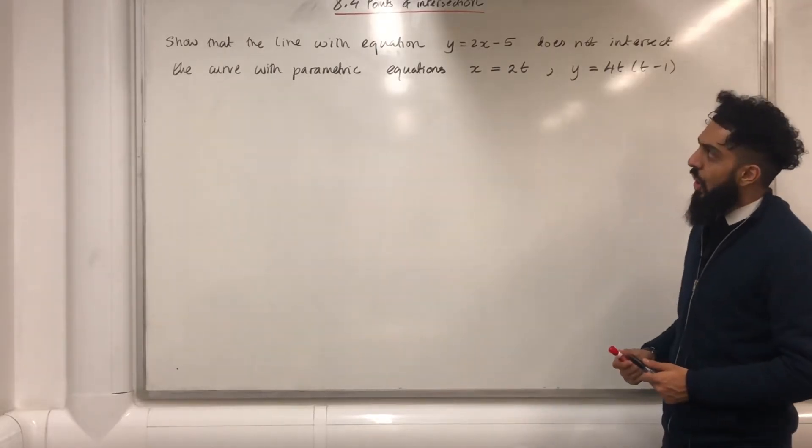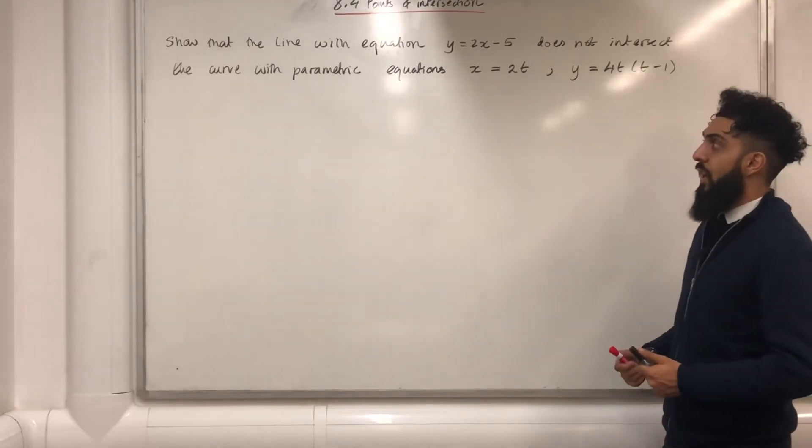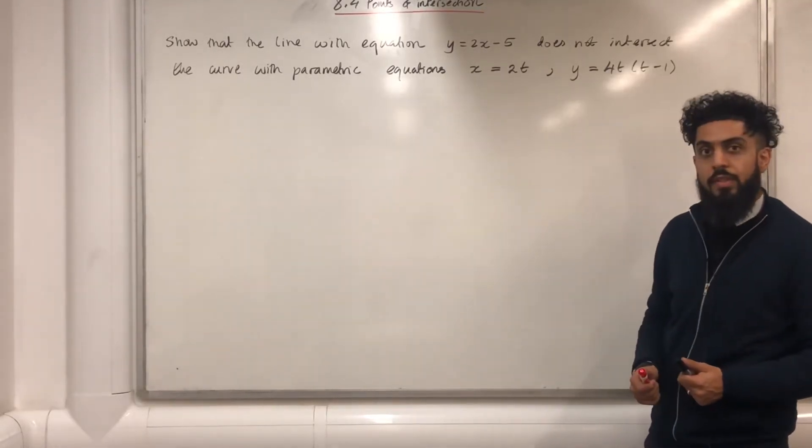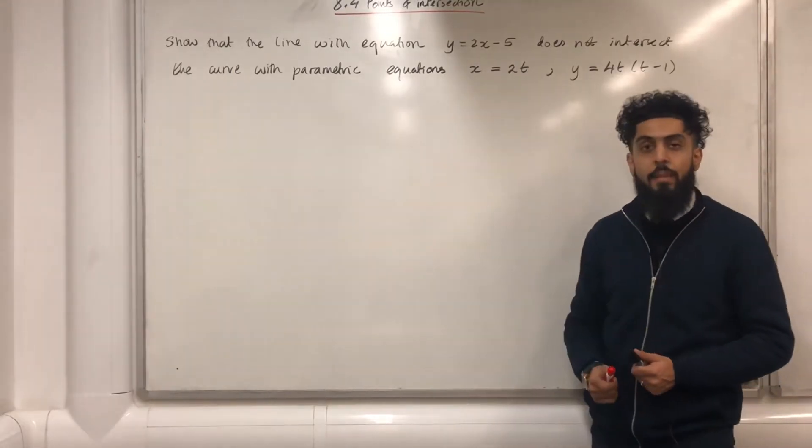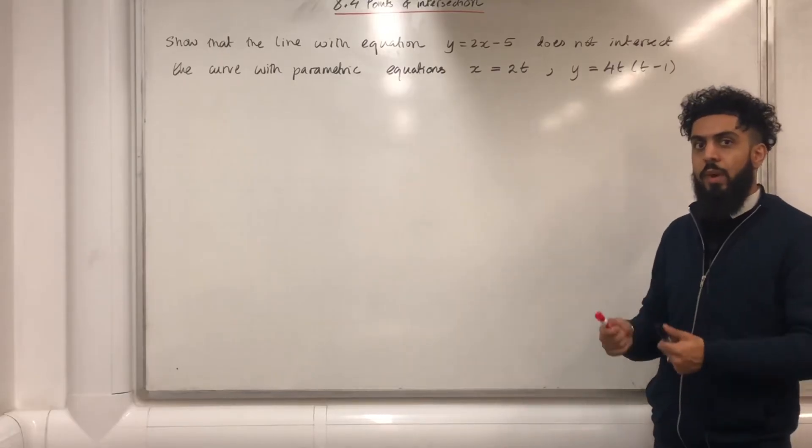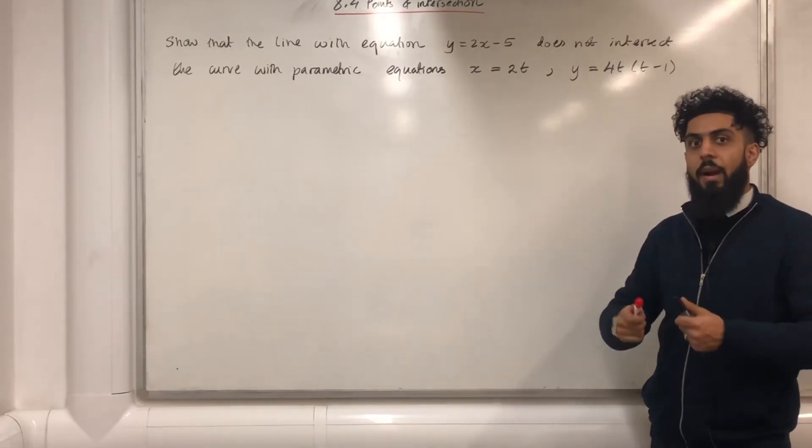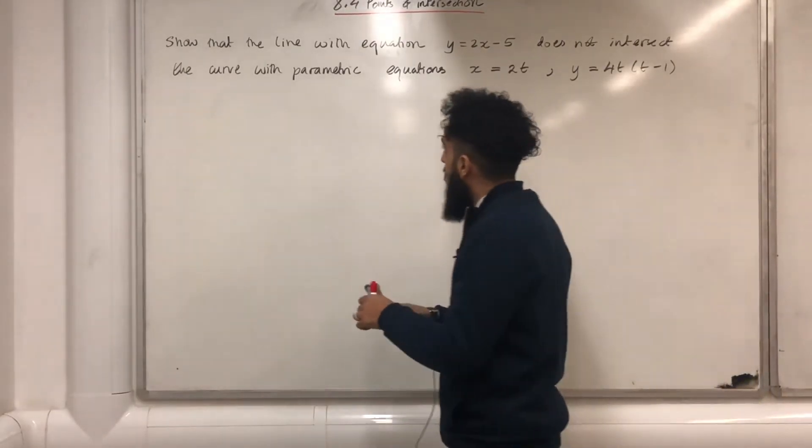Show that the line with the equation y equal 2x minus 5 does not intersect the curve with parametric equations x equal 2t, y equal 4t times t minus 1 in brackets. The first step is to write down the Cartesian equation of the straight line and the parametric equations of the curve.